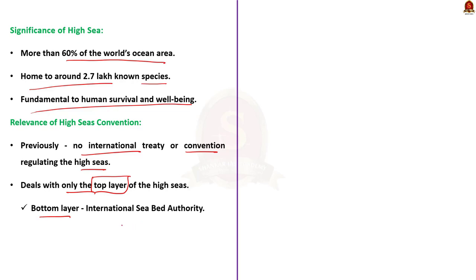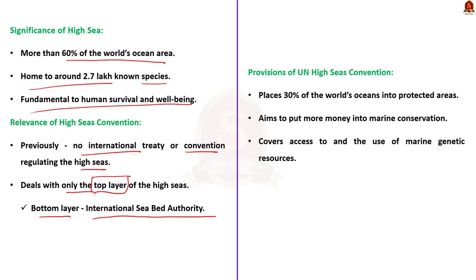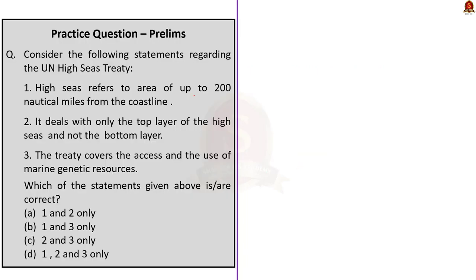Since previously there was no international treaty regulating the high seas, this new UN treaty has gained prominence. This UN High Seas Treaty deals only with the top layer of the high seas; the seabeds are protected by the International Seabed Authority. The draft agreement recognized the need to address biodiversity loss and ecosystem degradation of the ocean, placing 30% of the world's oceans into protected areas. The treaty also covers access to and use of marine genetic resources. Statement 1 is incorrect — it describes territorial waters, not high seas. Statements 2 and 3 are correct. The correct answer is option C — 2 and 3 only.